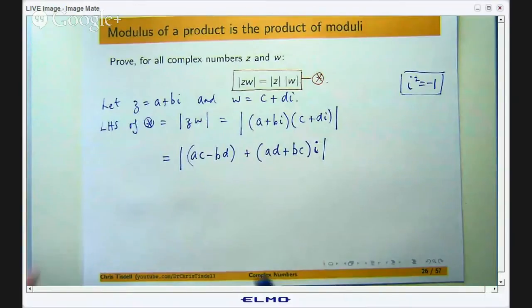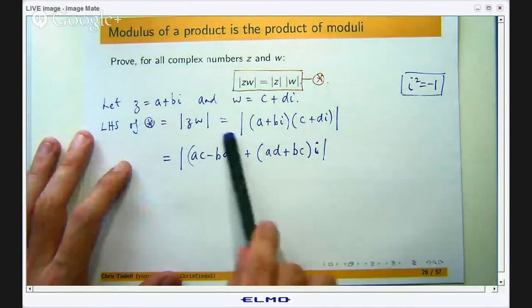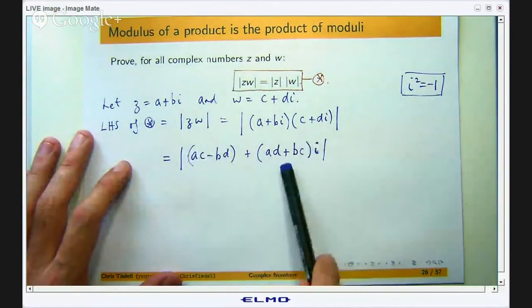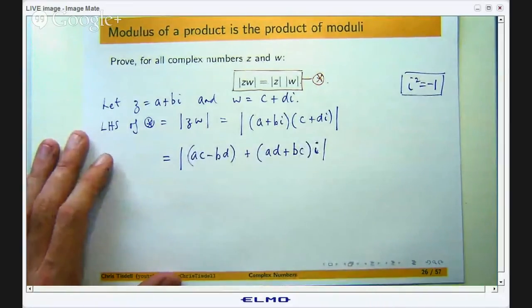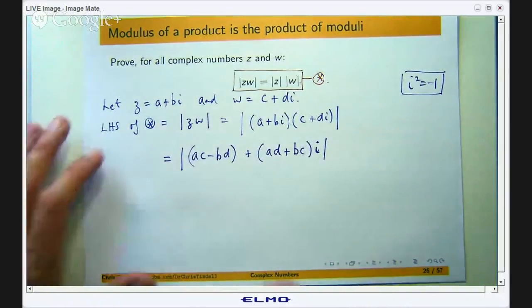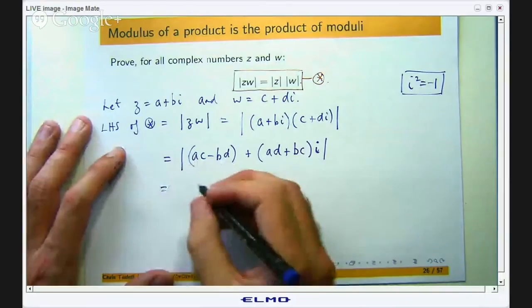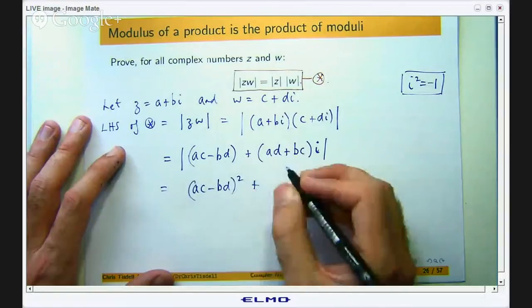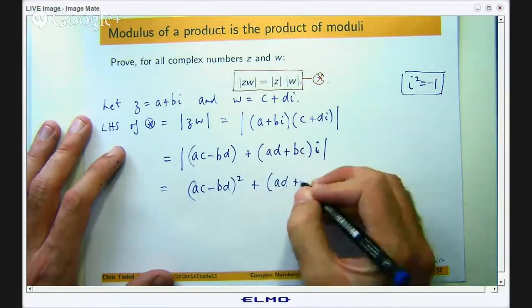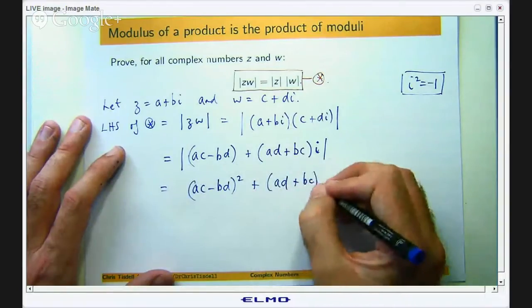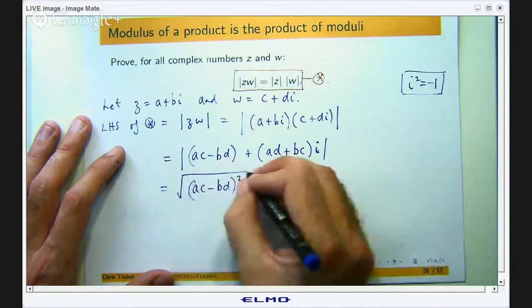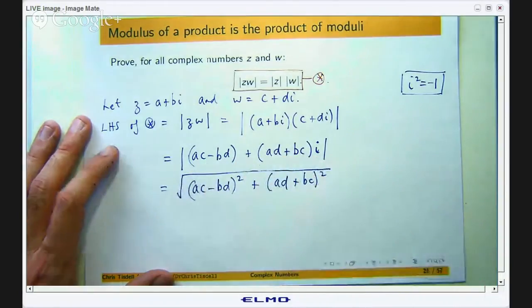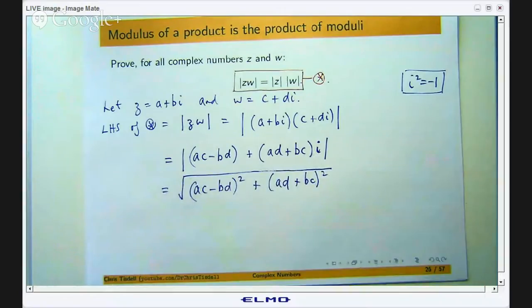Okay, and essentially I want to take a look at the modulus of this expression. So to take the modulus I look at the real part, I look at the imaginary part, I square them, add them together and take the square root. Okay, so I'm going to get a bit of a mess now. Okay, so it's looking like a bit of a mess.